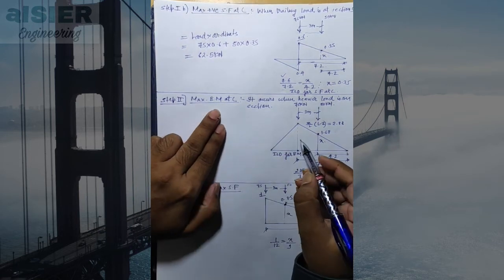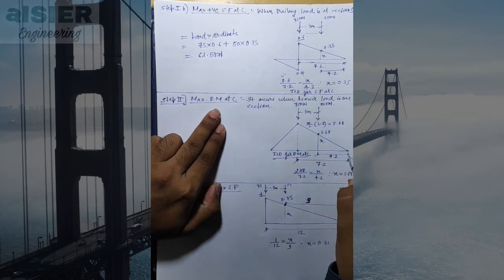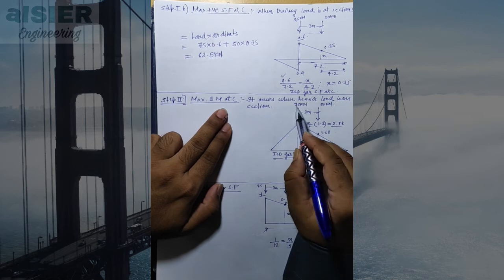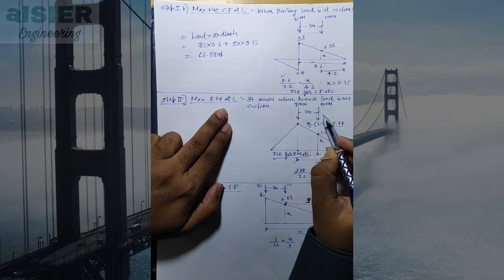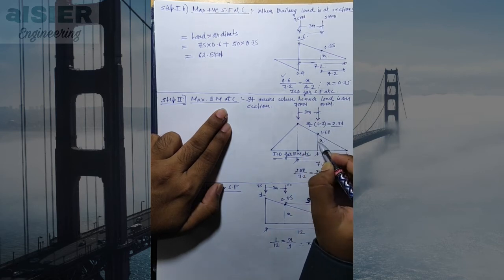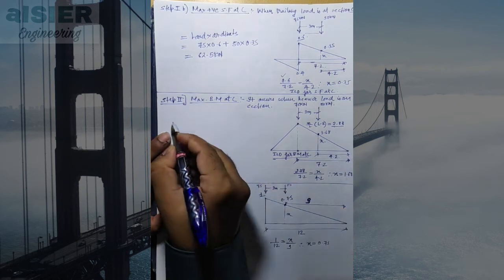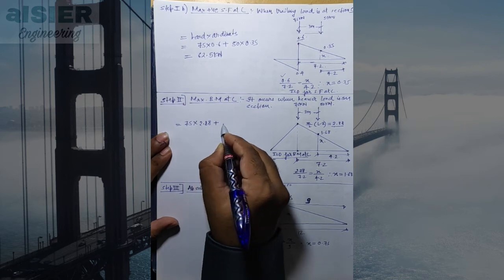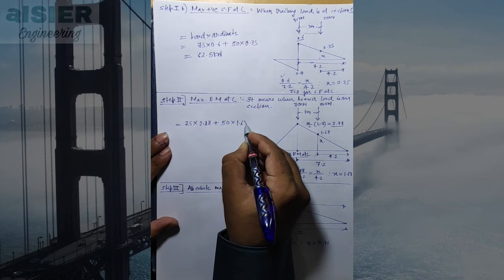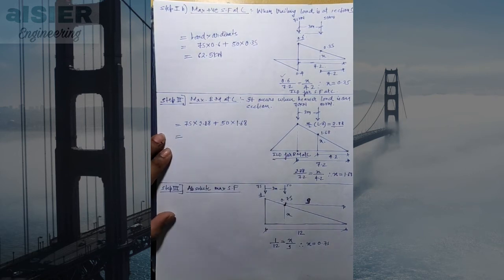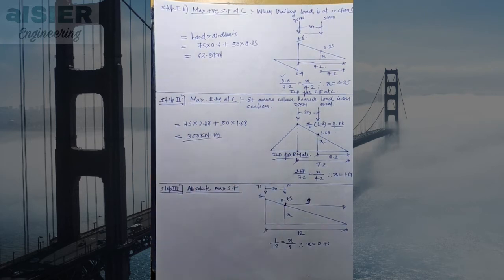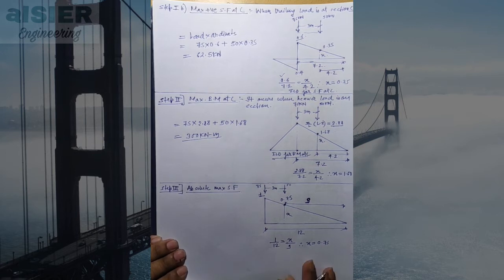Now we calculate the maximum bending moment at C. The ILD for bending moment at C is triangular in shape, with peak ordinate Z/L × (L−Z) = 4.8/12 × 7.2 = 2.88. Maximum bending moment at C occurs when the heavier load is on section C. The ordinate under the 75 kN load is 2.88, and using triangle similarity the ordinate under the 50 kN load (3 m away) is 1.68. Maximum BM = (75 × 2.88) + (50 × 1.68) = 300 kNm.